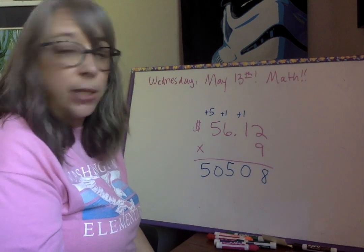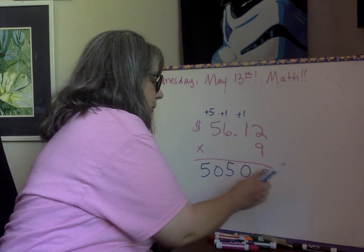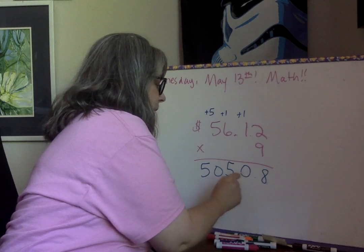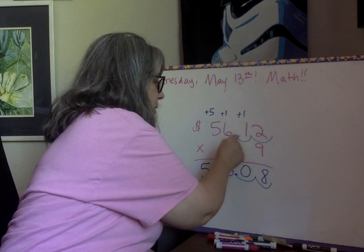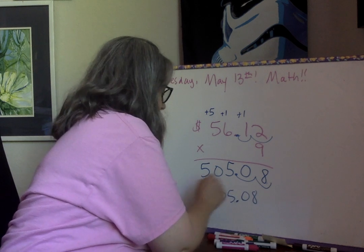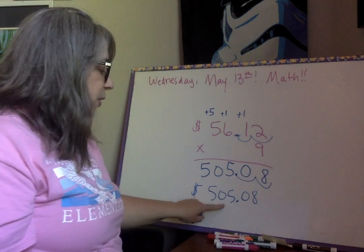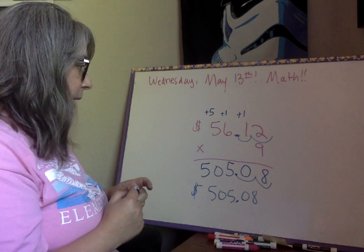How many hops are we going to make? We're going to make two. One, two, one, oops, sorry. One, two, one, two, one, two. Here we go. So our answer is $505.08.